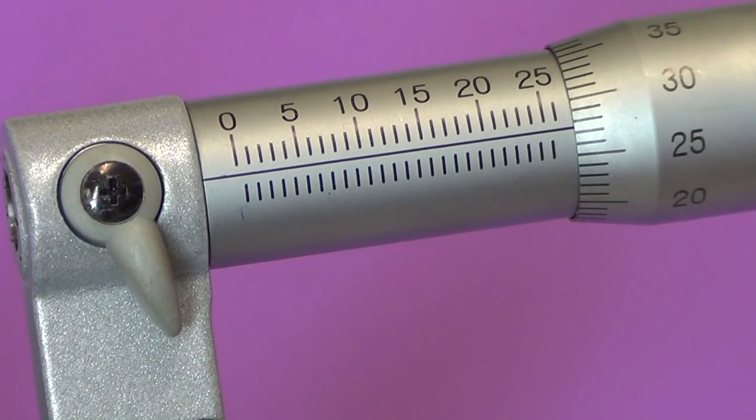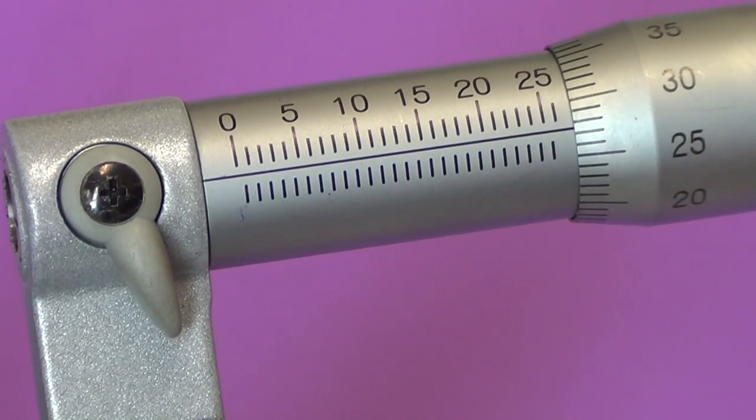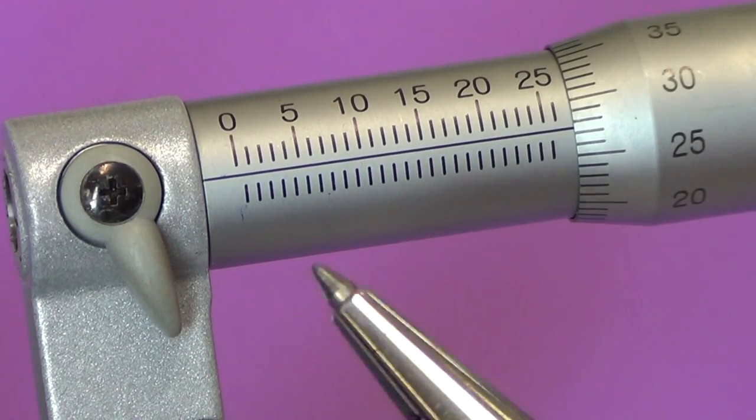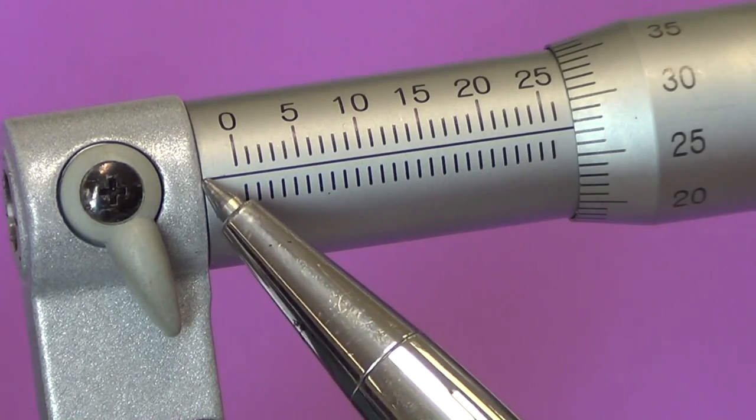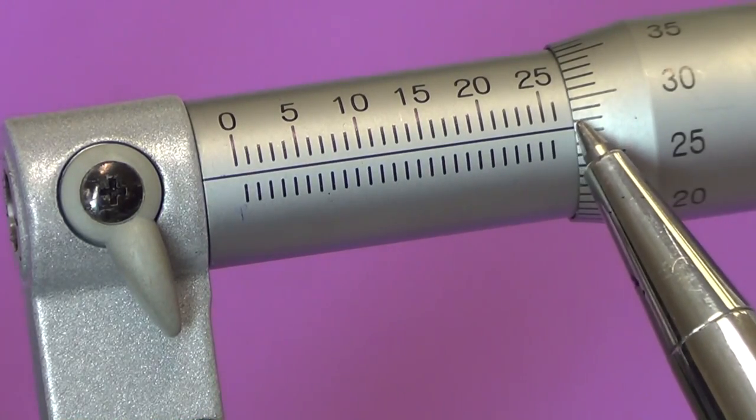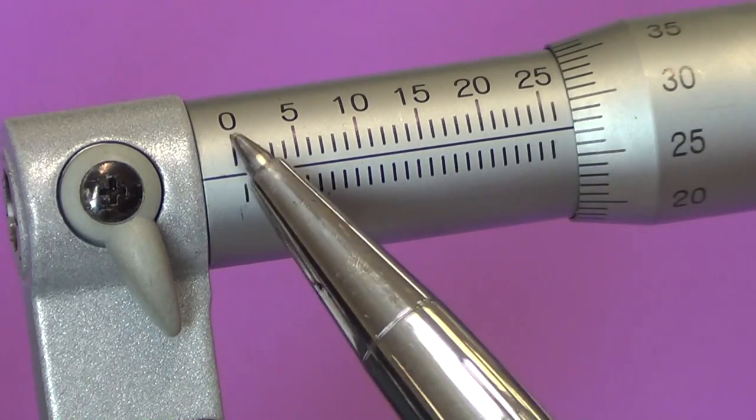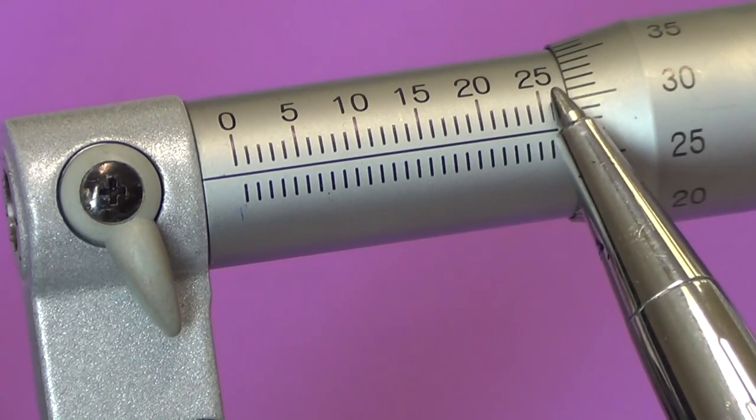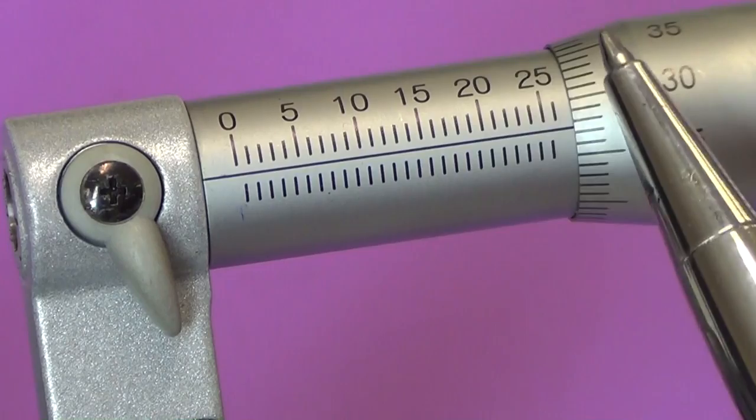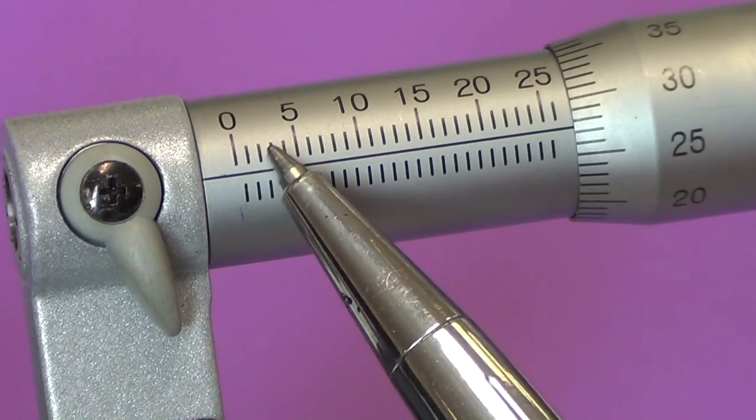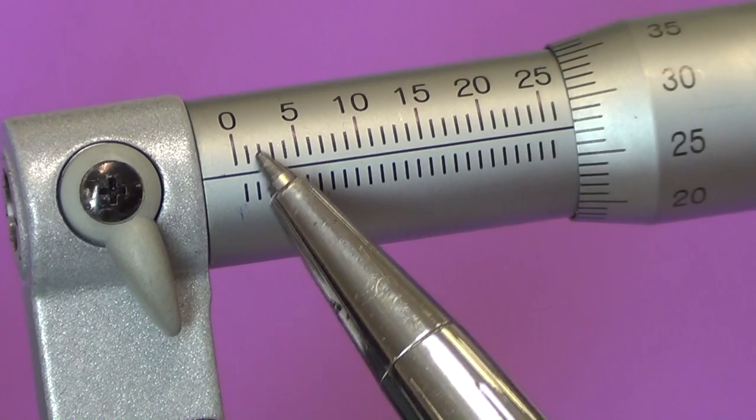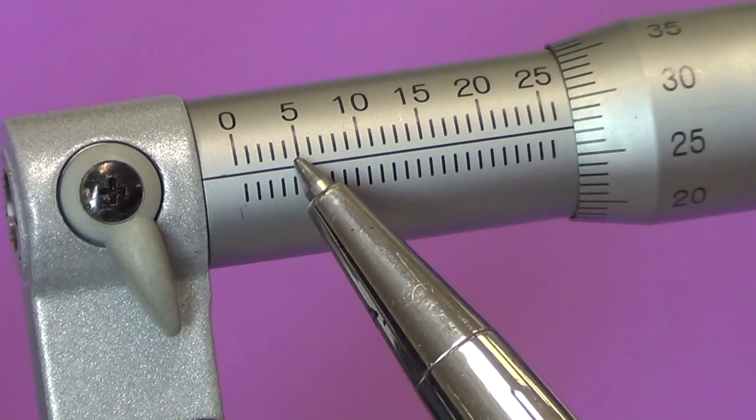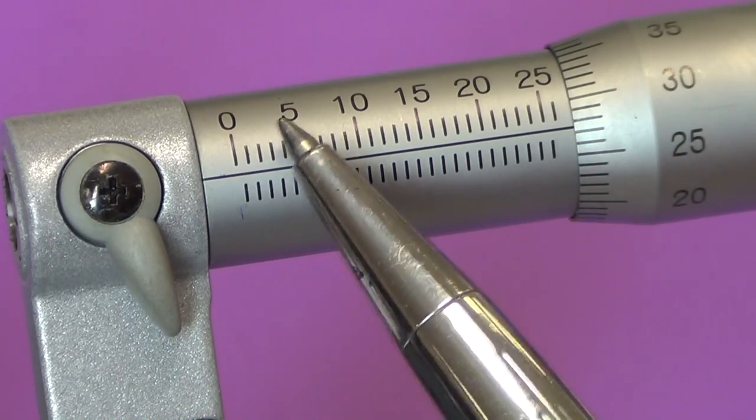Here we see the micrometer, and we're looking at the sleeve. The sleeve contains the major scale or the millimeter scales. You can see there a longitudinal or horizontal line running along the full length of the sleeve. On the top of that line are increments of one millimeter: one, two, three, four, and five millimeters, and that continues along the sleeve in groups of five.